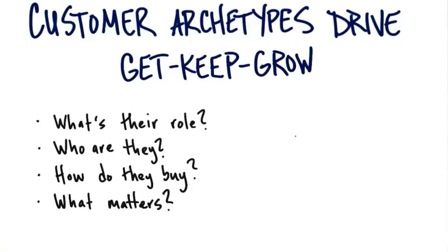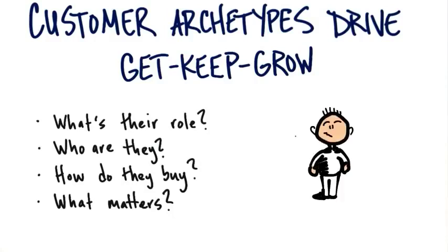Now, we keep using the words get, keep, and grow, but this get, keep, and grow actually refers to human beings, not just random ideas. And one of the things we need to understand is what's the archetype or the persona of our customers that we're actually wanting to get.